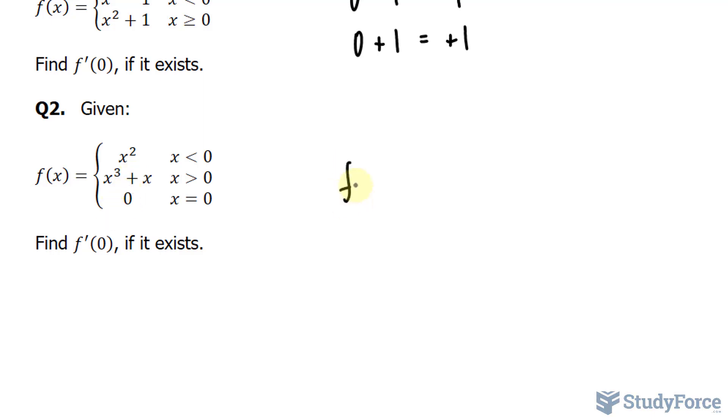Because the first part of the function is equal to the second part of the function and that's equal to the third part of the function, then this function is continuous at zero. We can move on to the next step of taking the derivative of each of these parts.